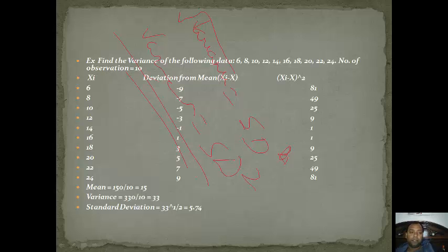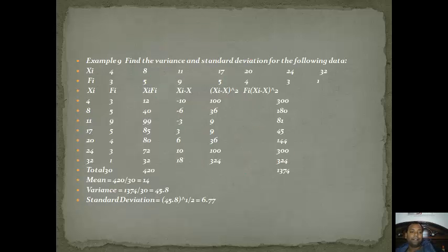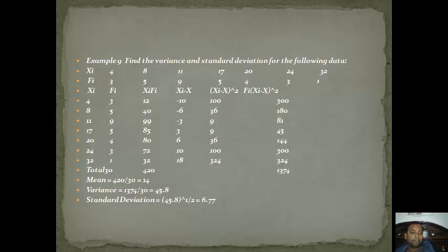Now suppose frequency data is given: xi is the data and fi is the frequency — so 4 is repeated 3 times, 8 is repeated 5 times, 11 is repeated 9 times, 17 is repeated 5 times, and so on. We calculate the mean by finding the sum of xi × fi (multiplying each data value by its frequency) and dividing by the total number of observations. The sum of all xi × fi = 420.